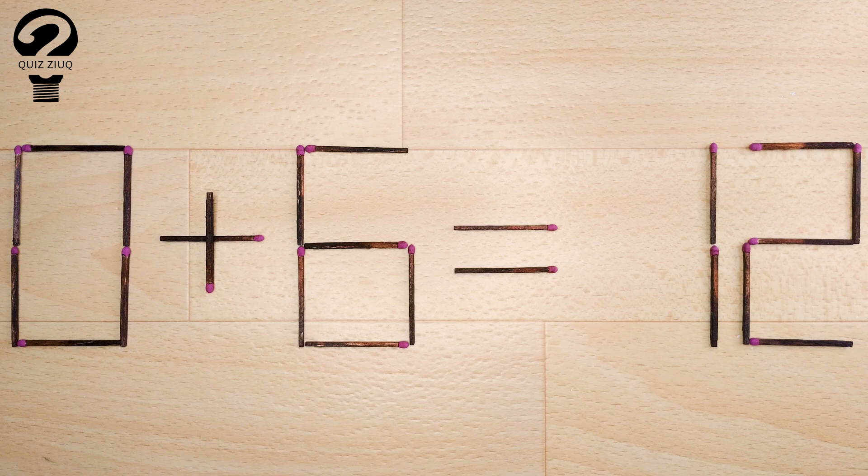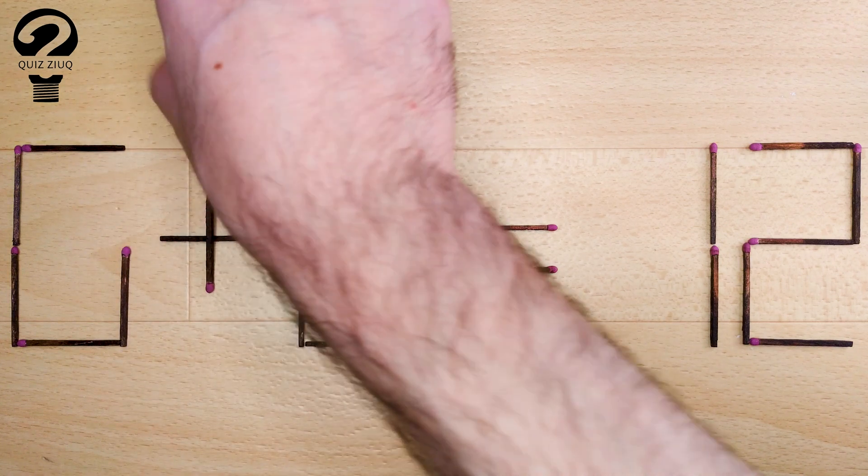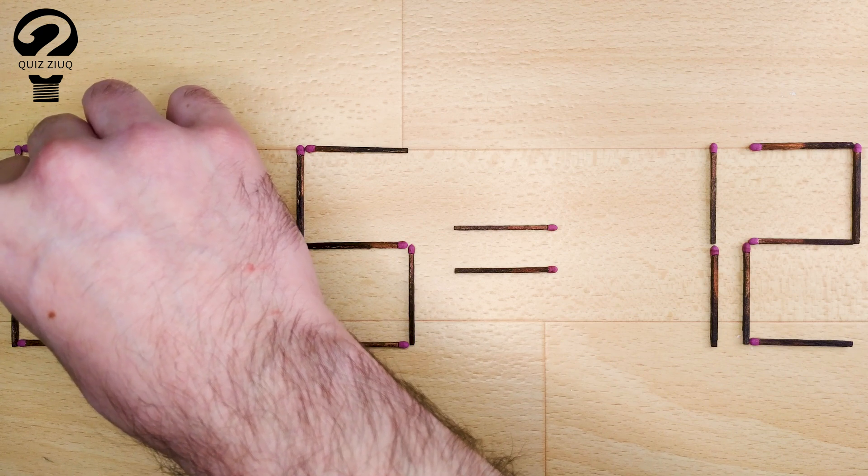How is this little puzzle solved? We just need to move one matchstick. And now, when we check, 6 plus 6 equals 12. 12 equals 12.